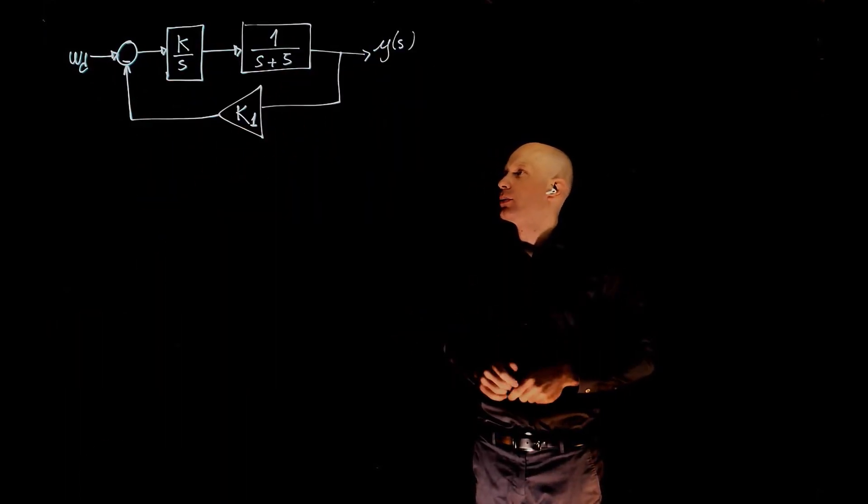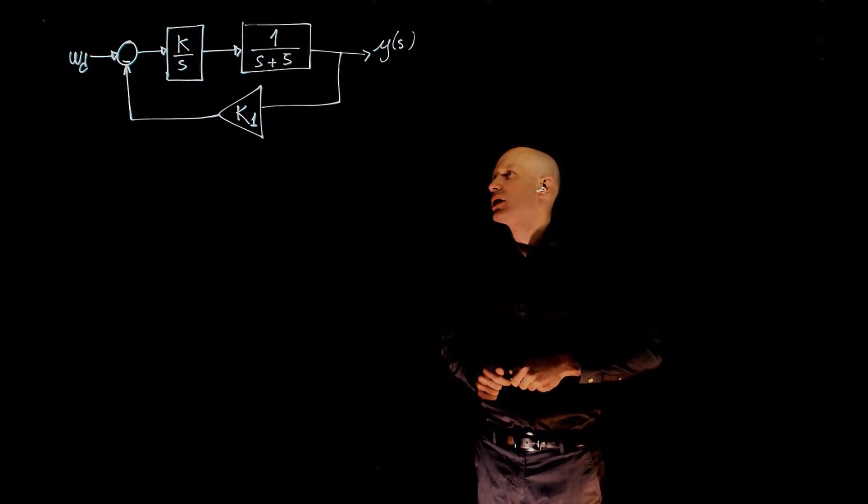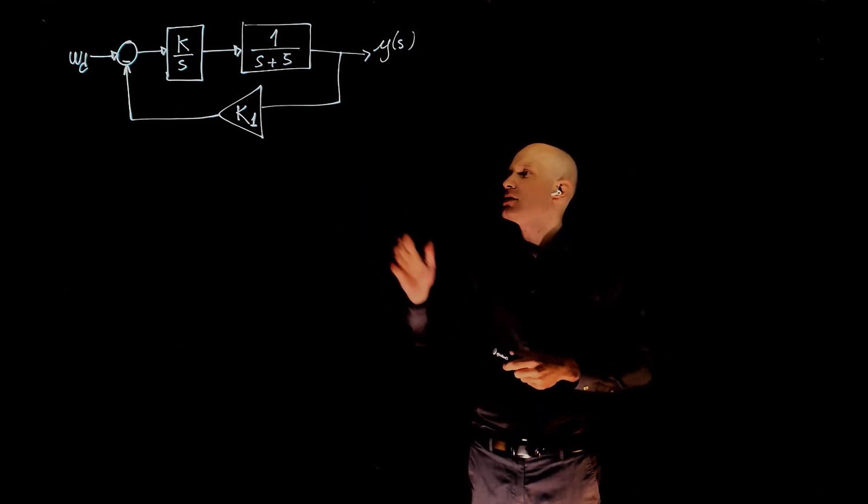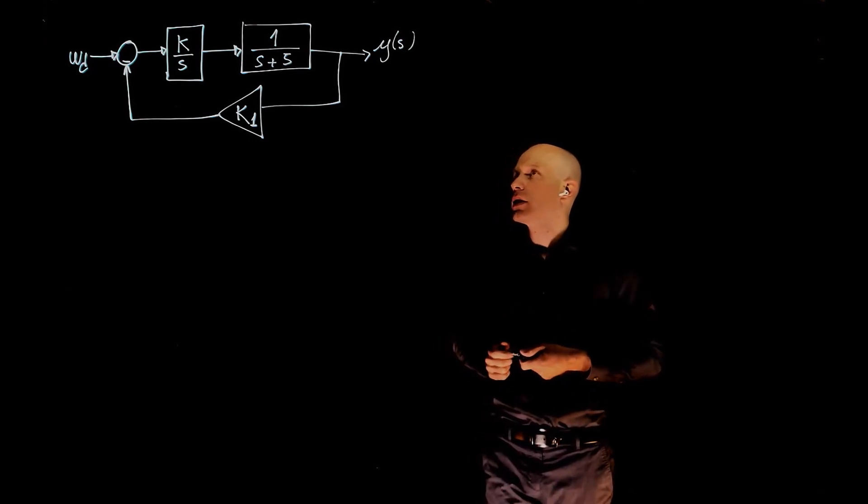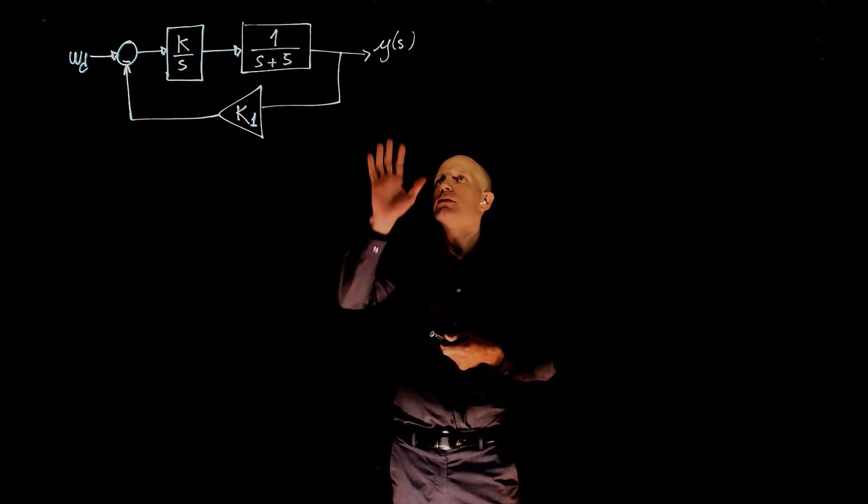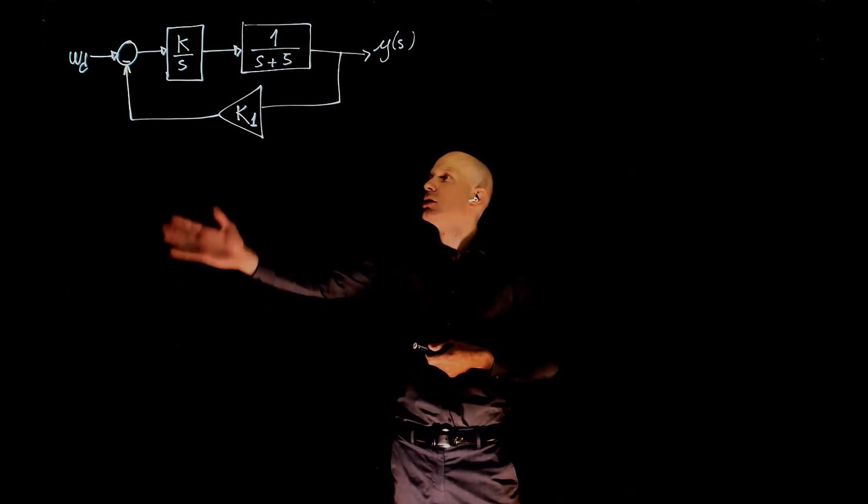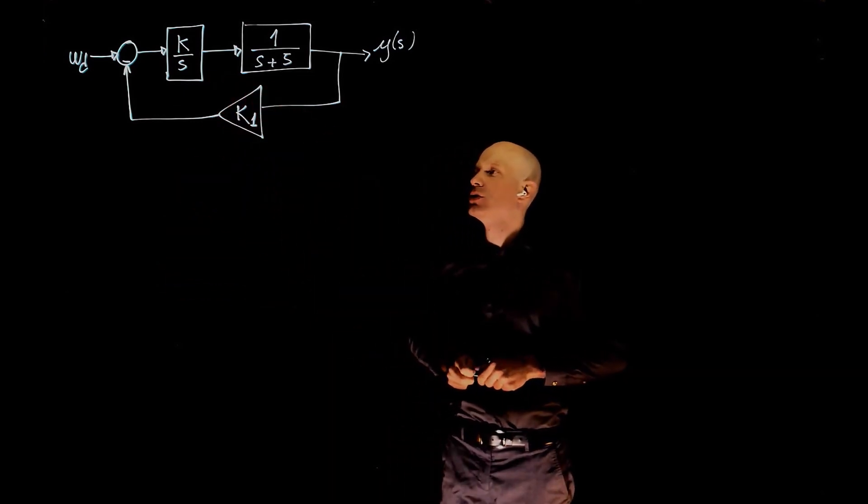In this example, we are interested in the range of k1 so that this control system has a steady-state error of less than 1%. The steady-state error here refers to the steady-state error between the input and the output, so I set the disturbance to 0.